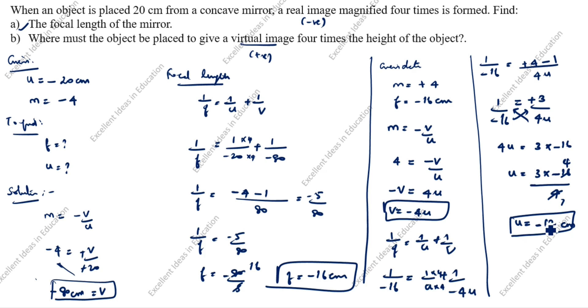u value is minus 12 centimeter. So the object should be placed 12 centimeter from the concave mirror. Thanks for watching this video.